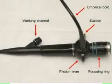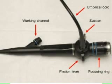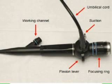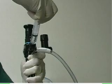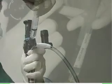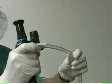The handle also contains the proximal port of the working channel, which extends distally to the tip of the scope. This channel can be used to pass various instruments into the airway and can be used for saline irrigation, administration of medications, and suction.